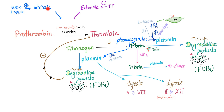Here's the whole story: the intrinsic or extrinsic pathway activates the prothrombinase complex, activating prothrombin into thrombin, and fibrinogen into fibrin. Plasminogen gets incorporated into the fibrin fibers. TPA, coming from the injured endothelium, activates plasminogen into plasmin. Active plasmin converts fibrin into soluble fibrin degradation products, and stabilized fibrin into D-dimer.